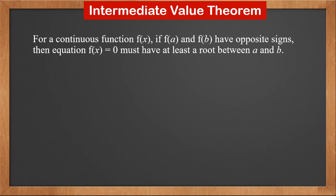For a continuous function f(x), if f(a) and f(b) have opposite signs, then the equation f(x) = 0 must have at least one root between a and b.